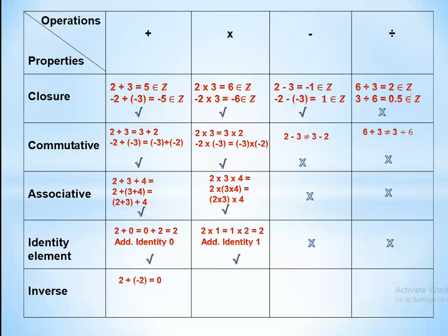The inverse: the additive inverse of any number means changing its sign. For example, 2 plus negative 2 equals 0, and 3 plus negative 3 equals 0. So a number plus its additive inverse equals 0. This means negative is the inverse of positive, and positive is the inverse of negative. We don't have an inverse property in multiplication, subtraction, or division.